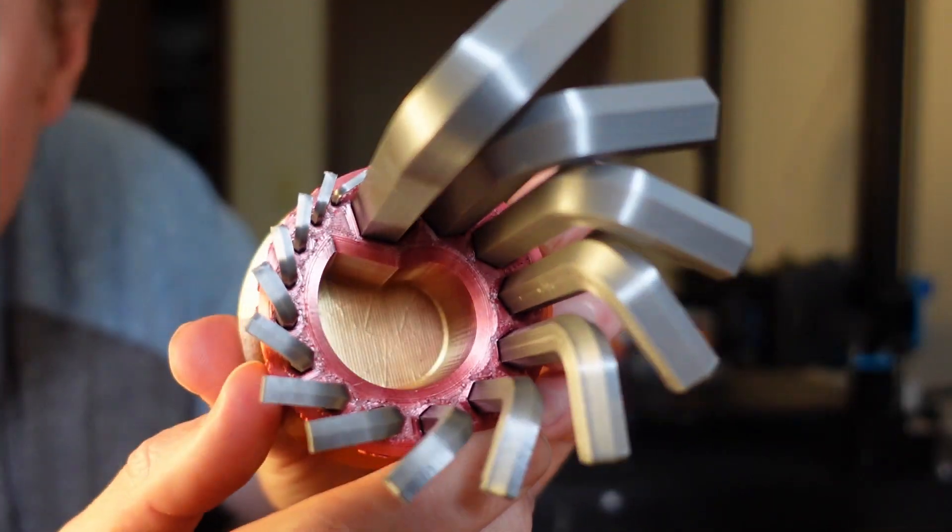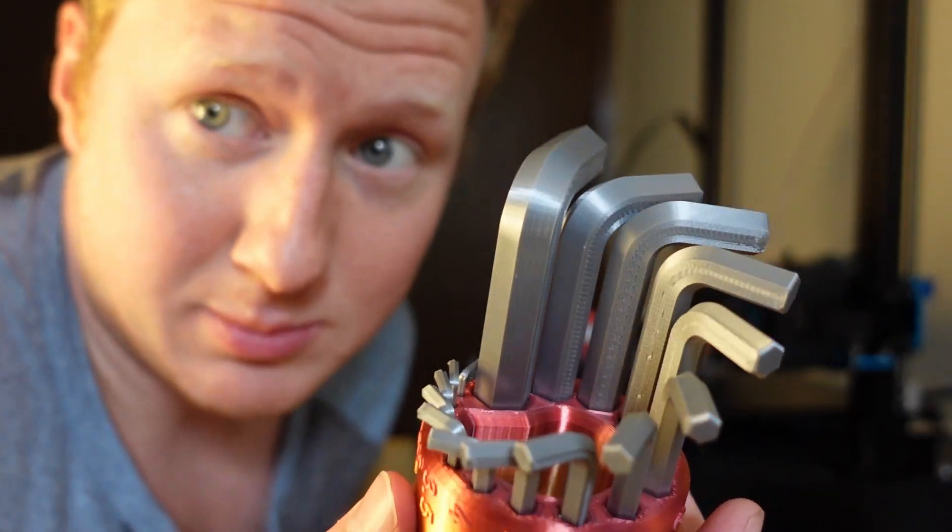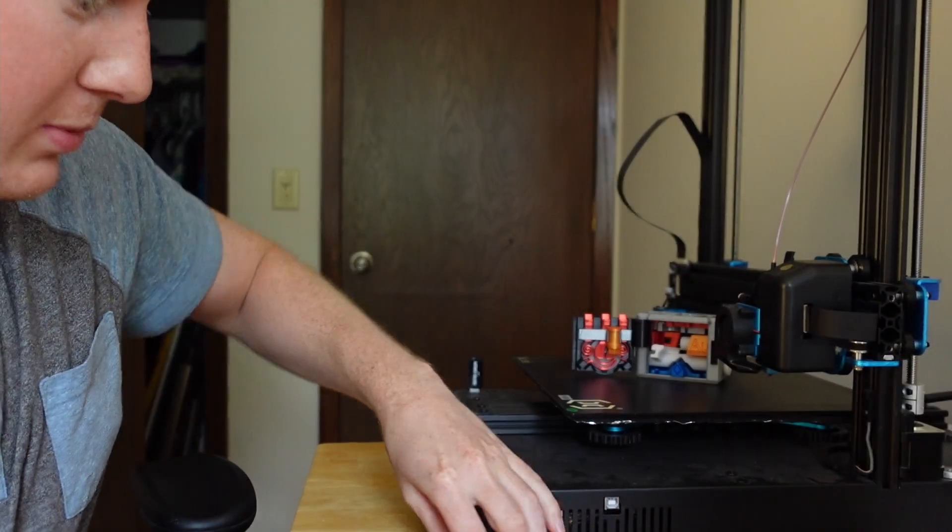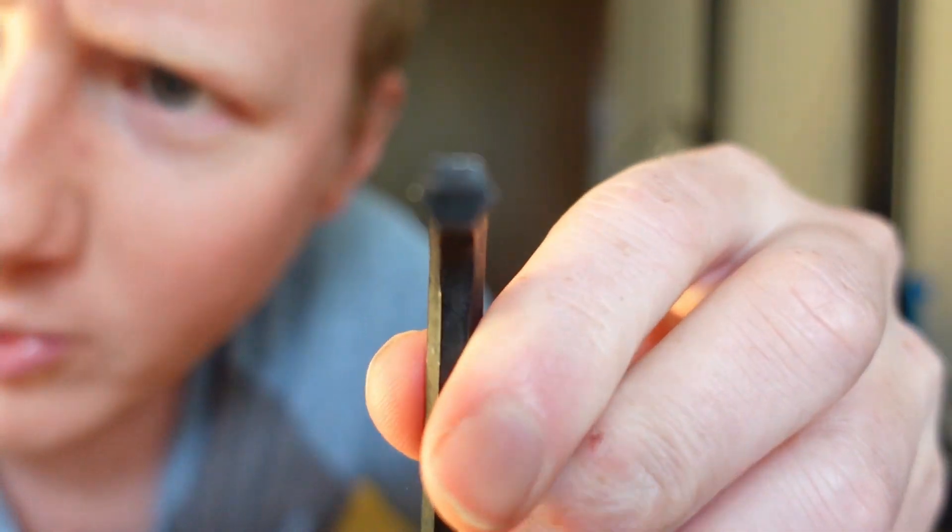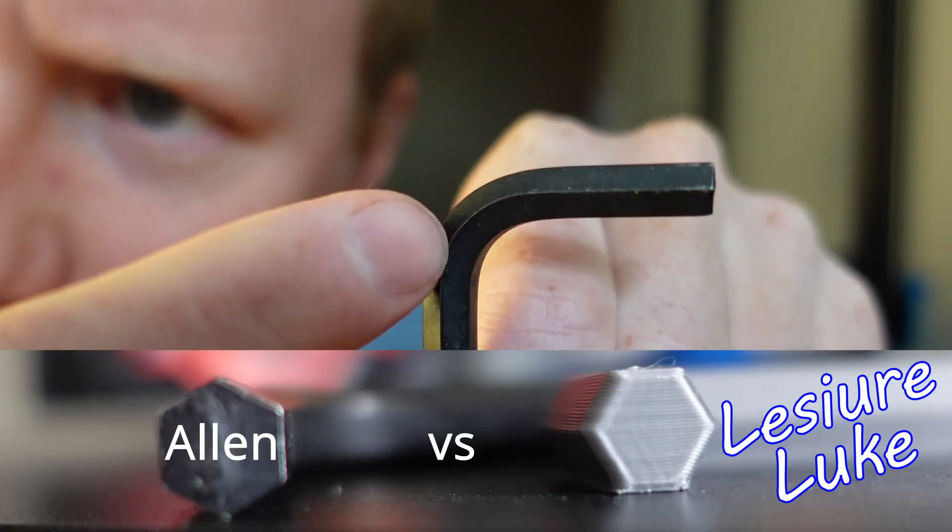What makes this really interesting, though it's not that interesting, is that every Allen key you have at home in your toolbox has its orientation like this—the edges, see this?